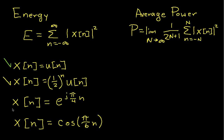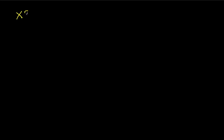The next one we'll do is where x is e to the j pi over 4n. So let's bring up a blank page, and we have x of n is e to the j pi over 4n.